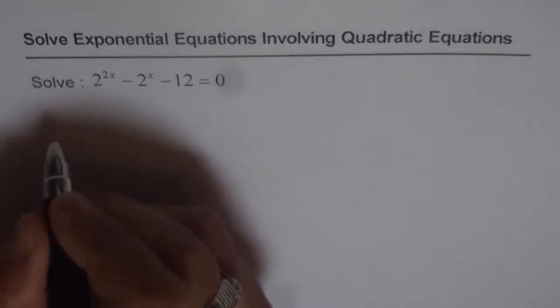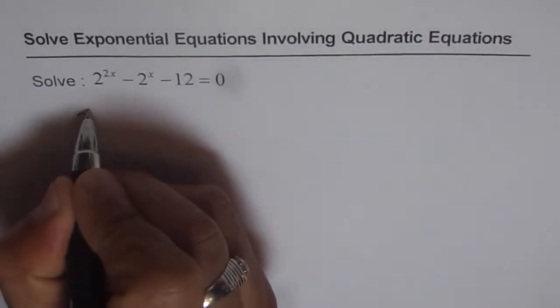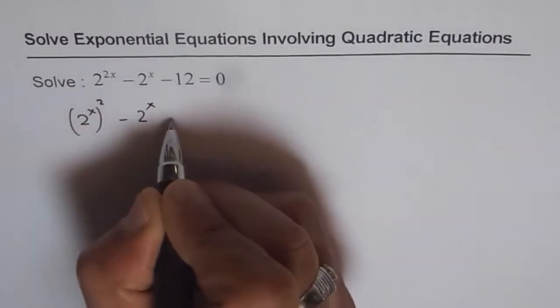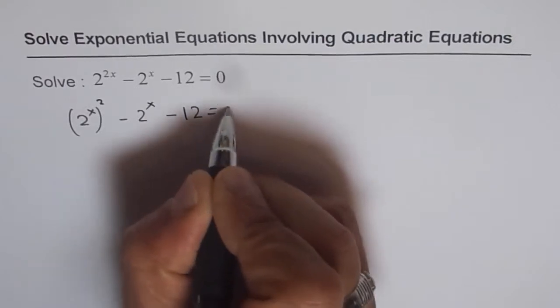We can rewrite this equation as 2 to the power of x whole square minus 2 to the power of x minus 12 equals 0.